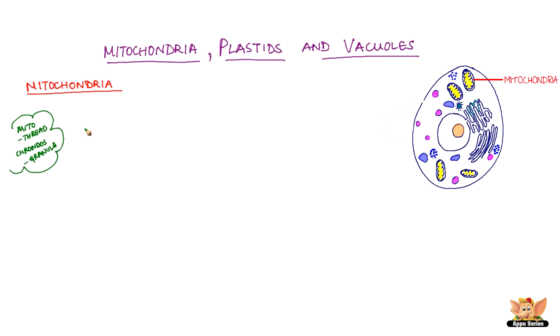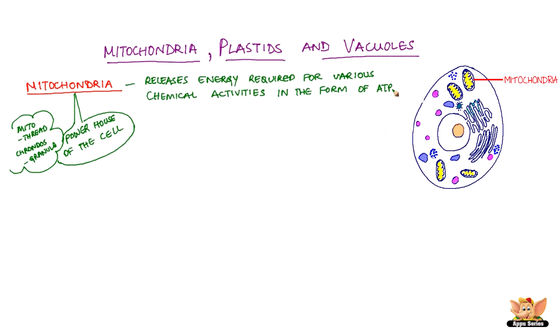They are the site for generation of energy, therefore they are also known as the powerhouse of the cell. Mitochondria releases energy required for various chemical activities in the form of ATP.